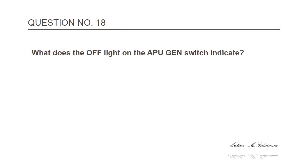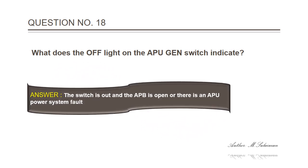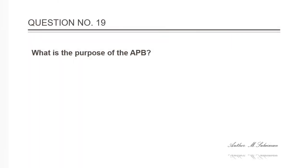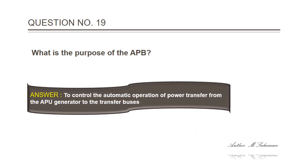Question 18: What does the off light on the APU generator switch indicate? Answer: The switch is out and the APB is open, or there is an APU power system fault. Question 19: What is the purpose of the APB? Answer: To control the automatic operation of power transfer from the APU generator to the transfer buses.